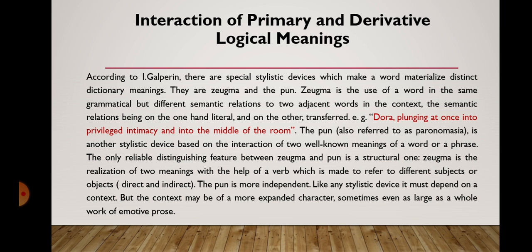The pun is another stylistic device based on the interaction of two well-known meanings of a word or a phrase. The one reliable distinguishing feature between zeugma and pun is a structural one. Zeugma is the realization of two meanings with the help of a verb which is made to refer to different subjects or objects — direct and indirect. The pun is more independent; it must depend on a context, but the context may be of a more expanded character, sometimes even as large as a whole work of emotive prose.